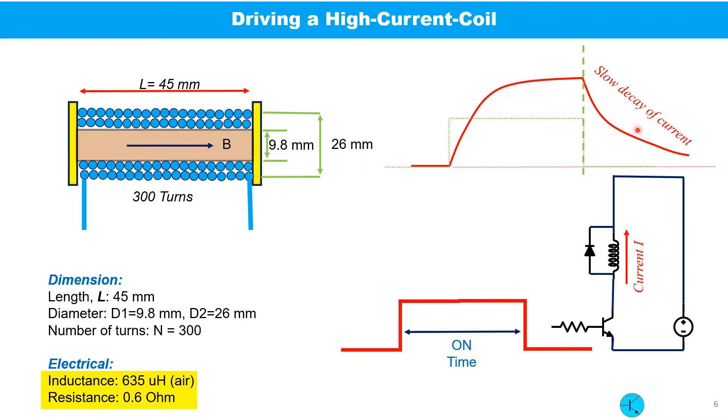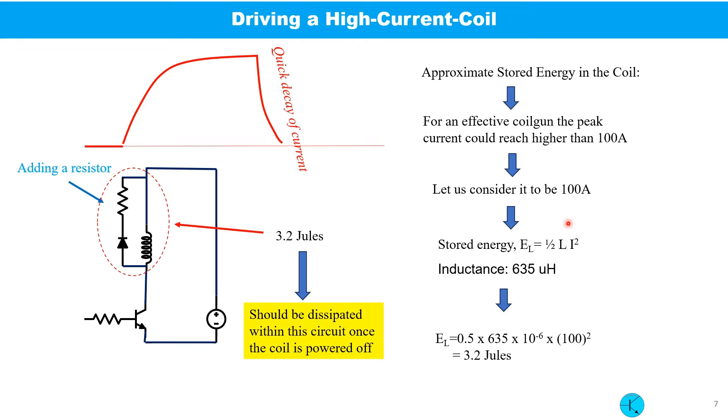If we use a diode across such a coil, once the switch is off, the current will decay slowly. And so our on time is again going out of our control. So to achieve faster current decay, we can add a resistor in series with the diode. We must choose a diode which can dissipate enough power. Let us see a practical example.